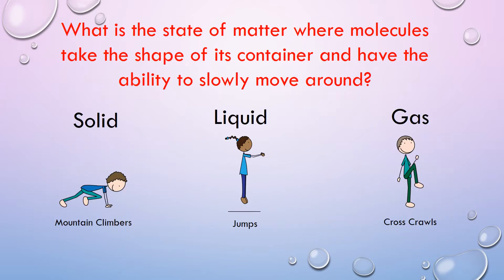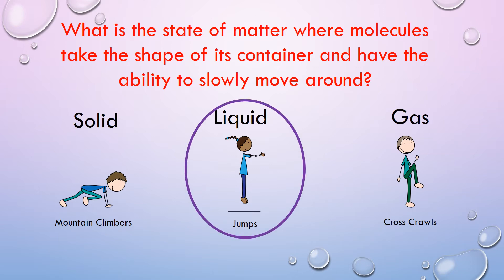Here's our first question. What is the state of matter where molecules take the shape of its container and have the ability to slowly move around? If you think it's solid, do mountain climbers. If you think it's a liquid, do jumps. If you think it's a gas, do cross-crawls. If you were doing jumps, you chose the correct answer — the answer is liquid.